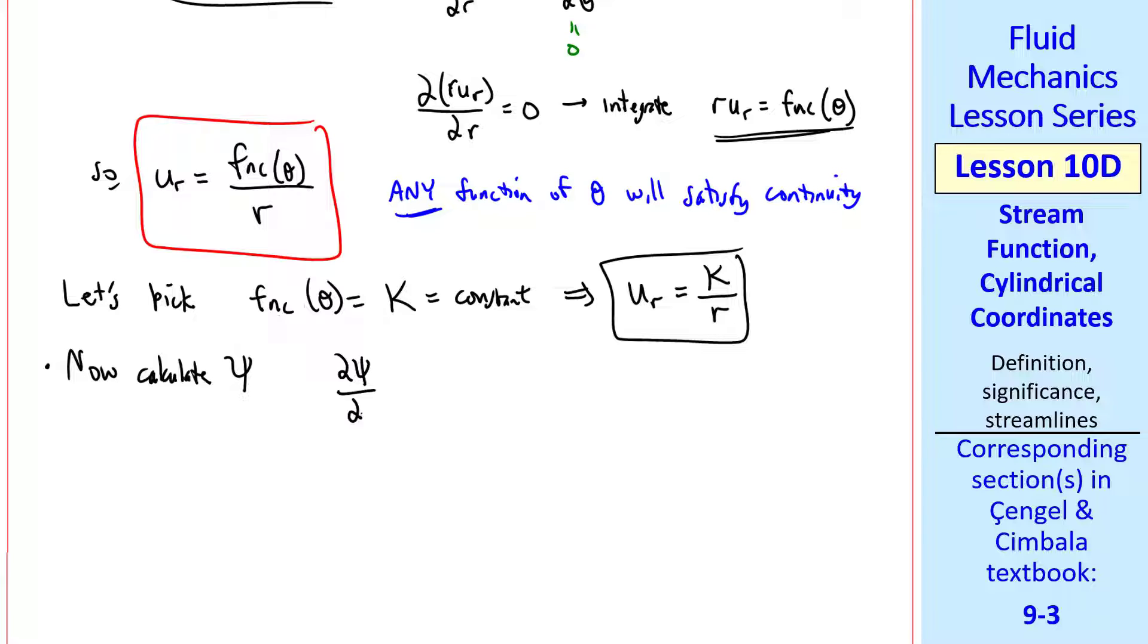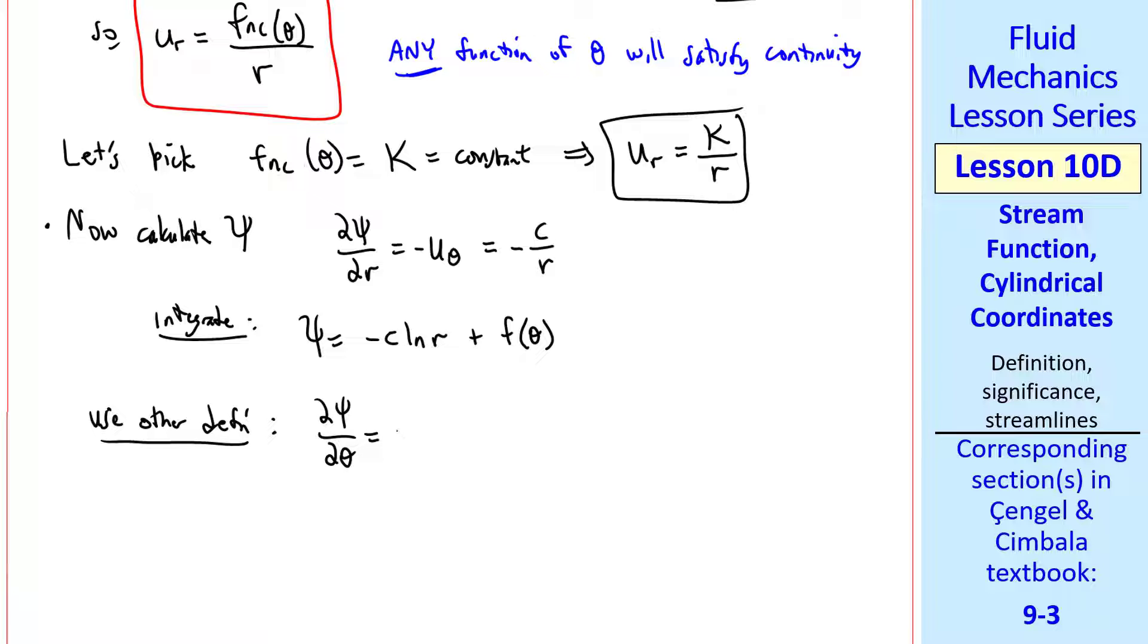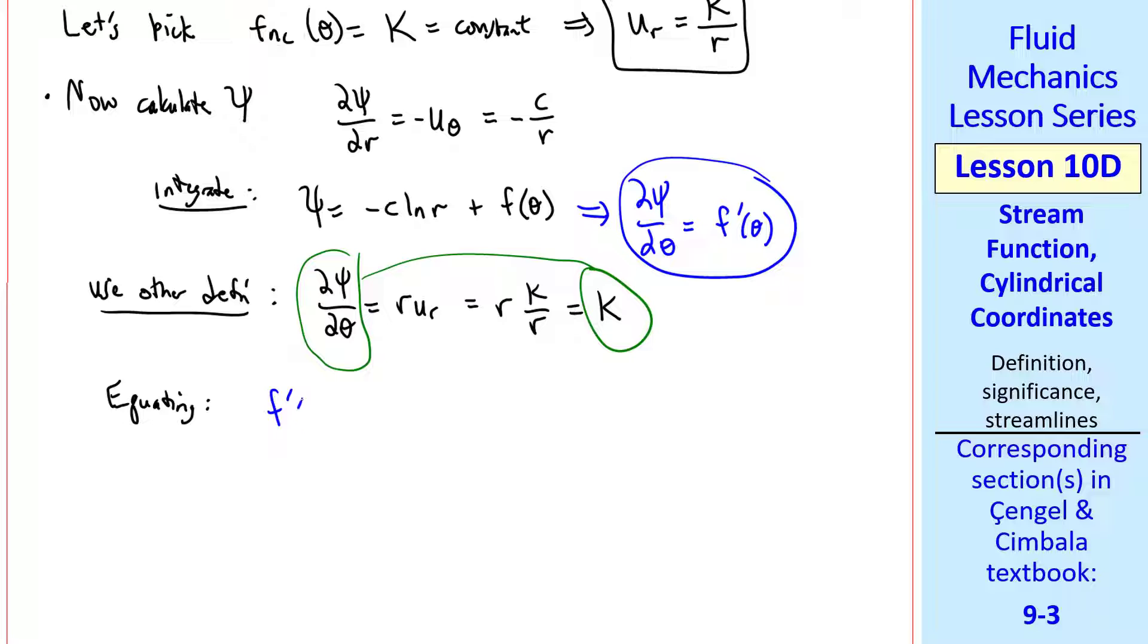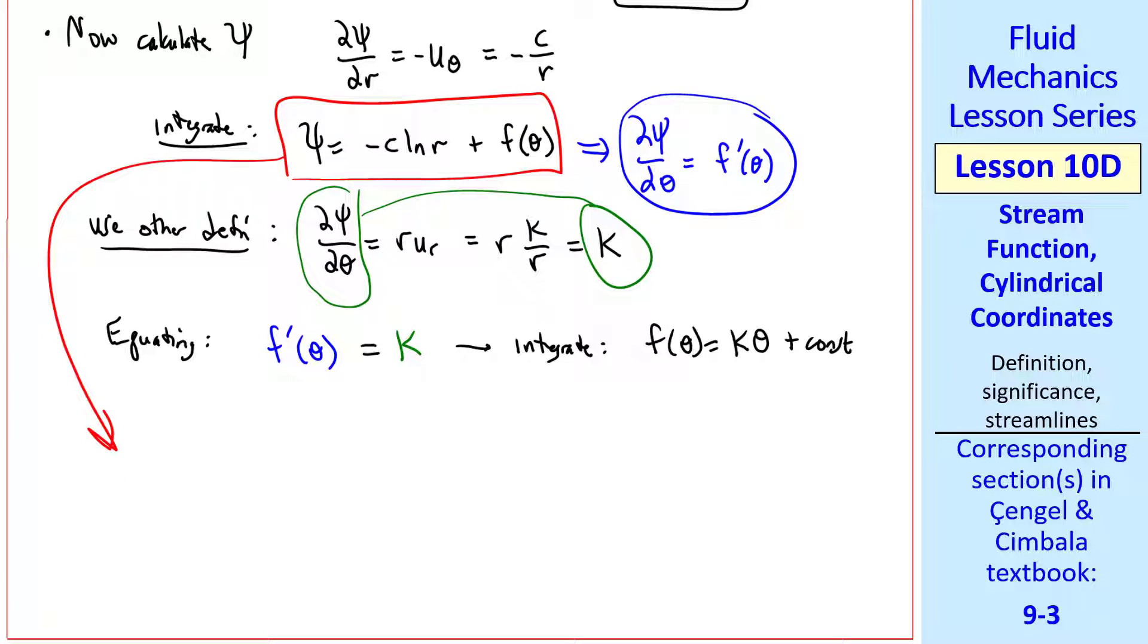Now let's calculate psi. Again, I pick one of our definitions. I pick this one where u_theta is c over r. I integrate with respect to r. I get negative c natural log of r plus the function of the other variable theta. Now we use the other definition of psi. Del psi del theta is r u_r equal r k over r, which is equal to constant k, where we use this expression for u_r. But from here, del psi del theta is f prime of theta, so we equate this expression with this expression for del psi del theta, keeping my color code f prime of theta equal k, which we can integrate and get f of theta equal k theta plus an arbitrary constant. Finally, we plug this into our expression for psi. So psi of r theta is negative c natural log of r plus k theta plus a constant. And that's our final answer.